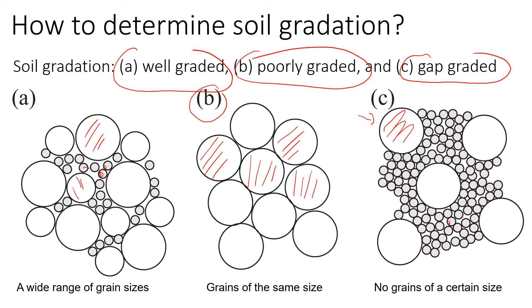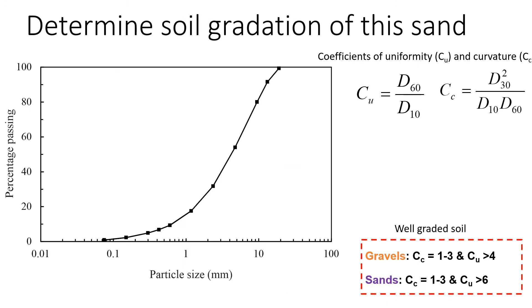Now let's determine the gradation of this soil. If you have watched the previous tutorial on how to classify coarse grain material, you already know that it is sand. We're going to see how we can classify the soil based on its gradation. To do that, we need to find two coefficients: a coefficient of uniformity and coefficient of curvature. To find these two coefficients, we need to find three parameters which is D10, D30, and D60.